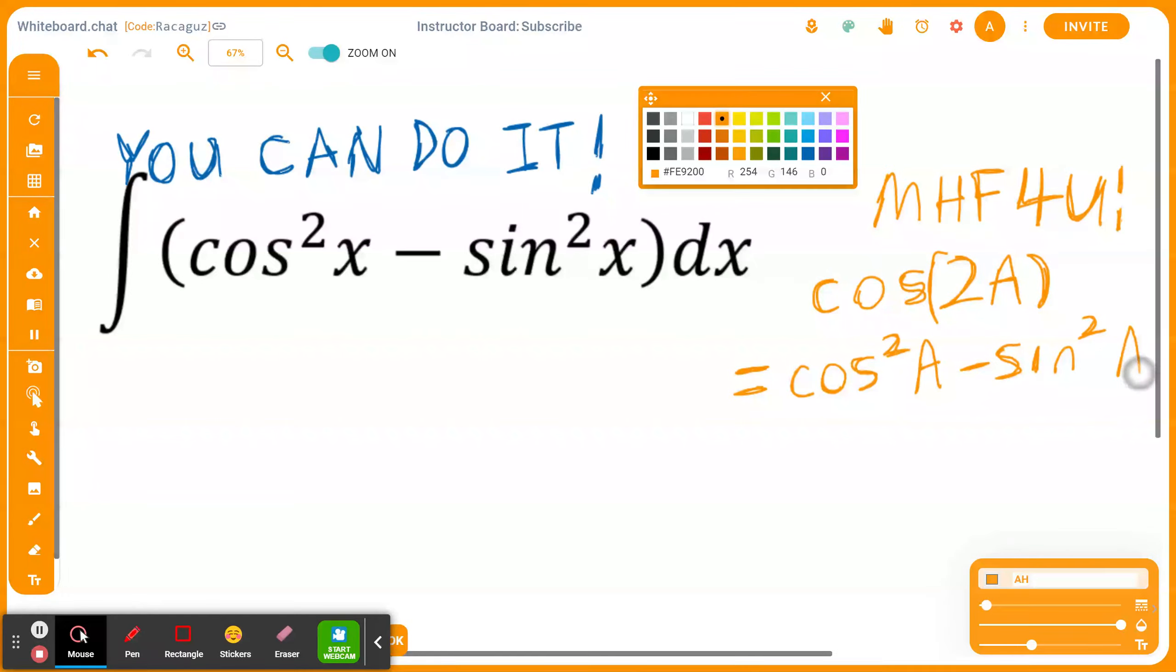Since we're reactivating this concept, the other two concepts you should think about are 1 minus 2 times sine A to the power of 2, or this is the same as 2 times cosine A to the power of 2 minus 1.